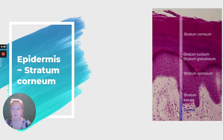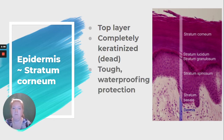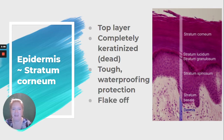The stratum corneum is the top layer. It is completely keratinized, meaning filled with keratin, so the cells are dead. It provides tough waterproof protection, and there are many layers of those stratified squamous cells. These cells flake off, usually in sheets because they are held tightly to each other.